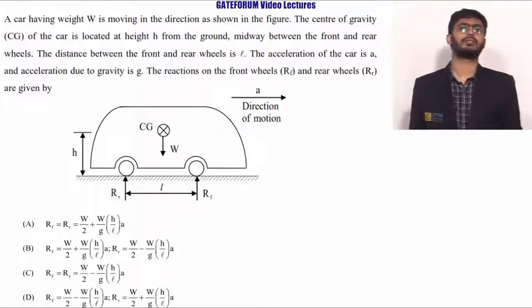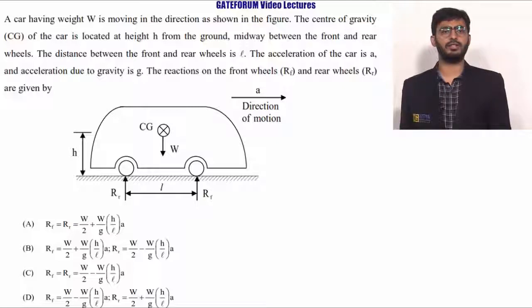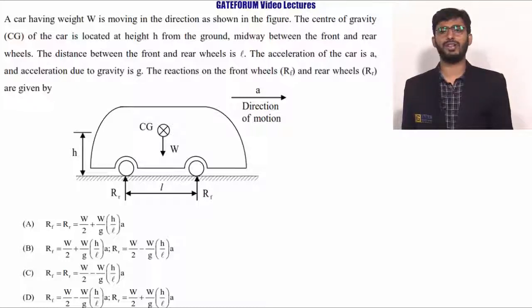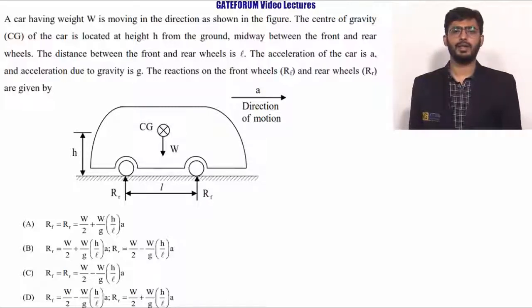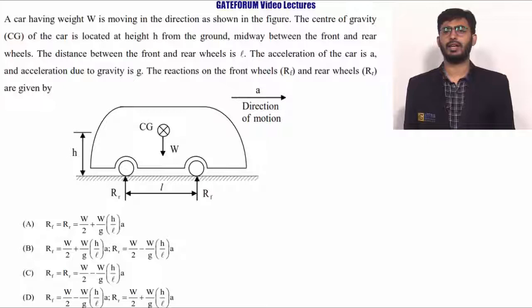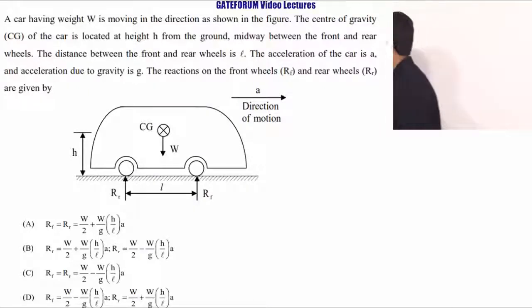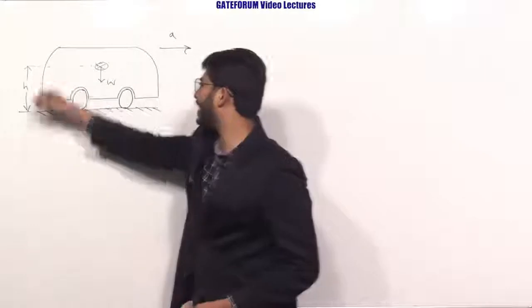This question belongs to engineering mechanics relating to dynamics of rigid bodies. A car having weight W is moving in the direction as shown in figure. The center of gravity CG of the car is located at a height H from the ground and midway between the front and rear wheels. The distance between front and rear wheels is L, the acceleration of the car is A, and acceleration due to gravity is G. The reactions at front wheels R_F and rear wheels R_R are to be found. The CG is at height H from the ground.